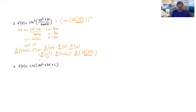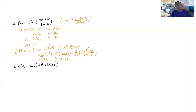Picking it off piece by piece: the derivative of v squared, just like x squared, is 2v — first part done. The derivative of sine u is cosine u — second part done. For the derivative of u, it's a fraction, so we need the quotient rule: f prime g minus g prime f over g squared. Where f is the top and g is the bottom.